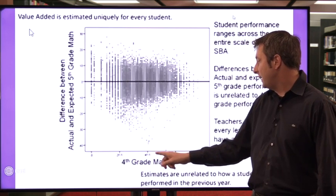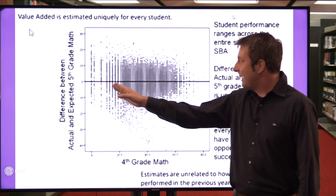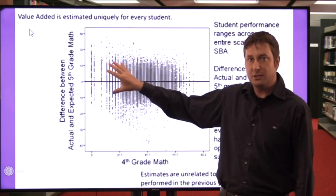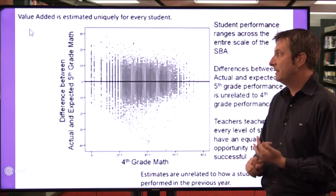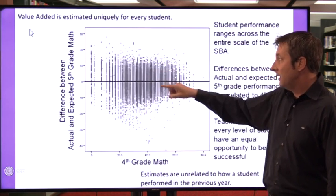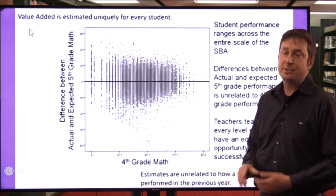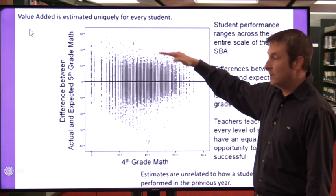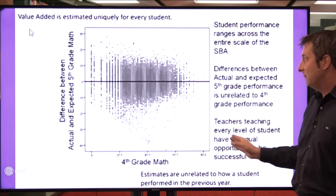Anyone above zero on the VAM axis were students who scored better than we would have predicted based on their past scores; everyone below underperformed based on prior test scores. There are just as many students who overperformed as underperformed. Student performance ranges across the entire scale of SBA. Critically, differences between actual and expected fifth grade performance is unrelated to fourth grade performance. Looking at just students who scored about a 20 on their fourth grade test, there are just as many dots that overperformed as underperformed.